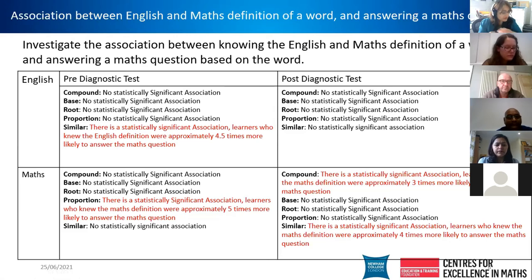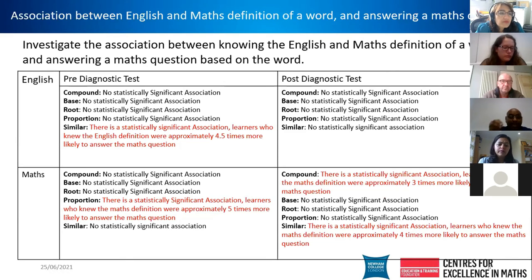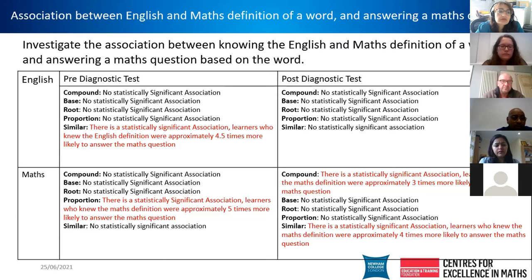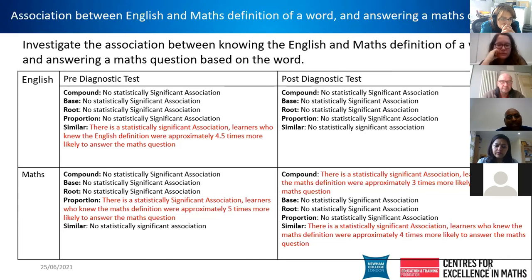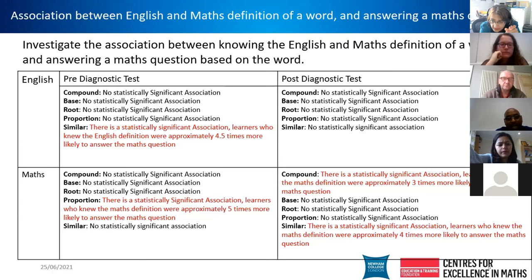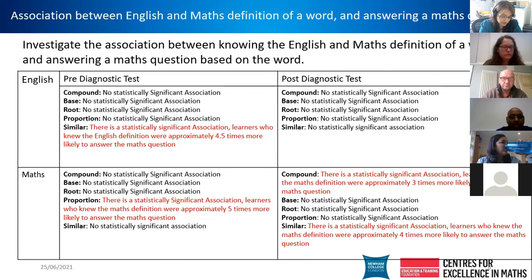We wanted to see if there was an association between knowing English and maths definitions of a given word and answering a maths question based on that word. We chose five words: compound, base, root, proportion, and similar. In four of those cases we observed a statistically significant association between knowing the definitions and correctly answering the maths question. More detail will be included in the report.